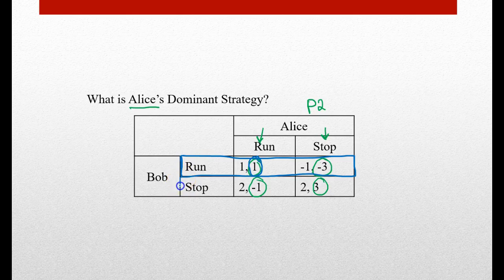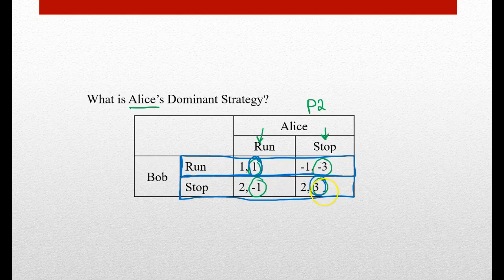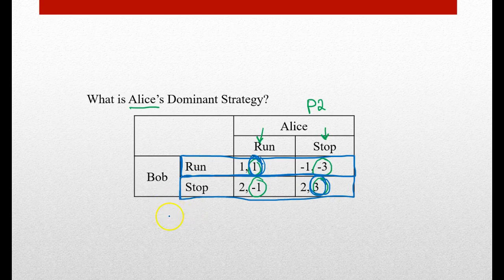Now let's look at if Bob chooses to stop — should Alice run or stop? We have negative one or three, and three seems like a better option. Now there's a problem: if Bob chooses to run, Alice should also choose to run. But if Bob chooses to stop, Alice should choose to stop. So depending on what Bob does, Alice should do something different. Since Alice doesn't have one strategy that always works, Alice does not have a dominant strategy.